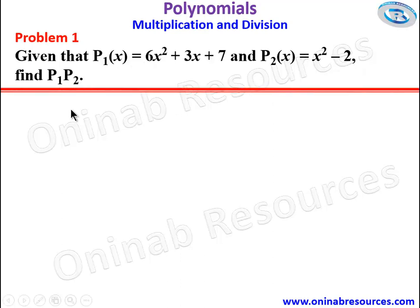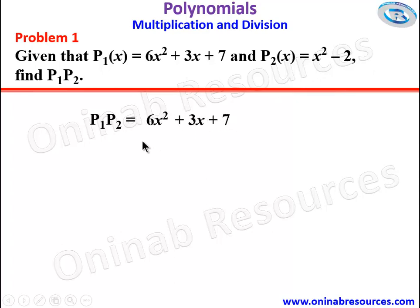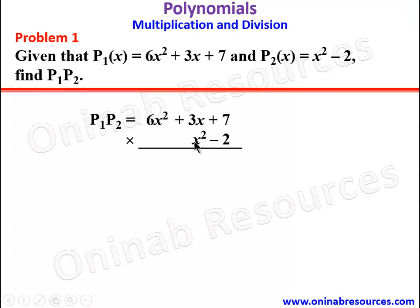In our solution we are going to apply the tabular form of multiplication. So we have p1 which is 6x squared plus 3x plus 7, then times p2 which is x squared minus 2. We use the constant term of p2 to multiply every term of p1, and thereafter we use the other term to multiply every term of p1.